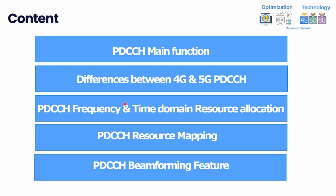Today's video will cover the main functions of PDCCH, the differences between 4G and 5G, and how the frequency and time domain resources are allocated for PDCCH. We'll also go through PDCCH resource mapping — how the user decodes PDCCH resources — and finally we'll cover PDCCH beamforming, which is a new concept in 5G that did not exist in 4G, especially in TDD.